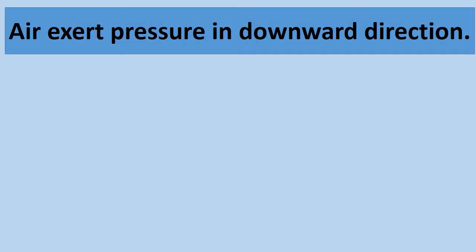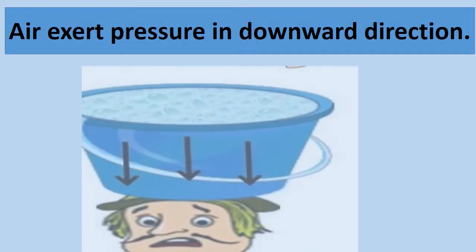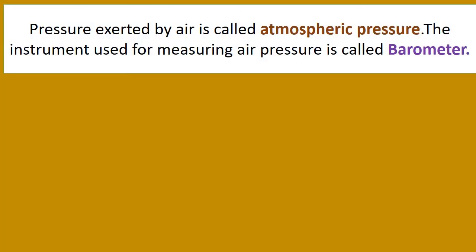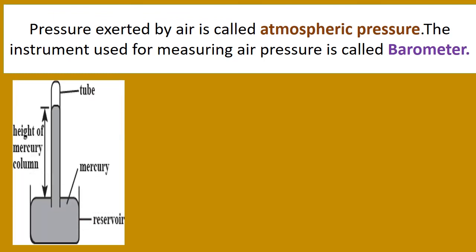Air also exerts pressure in the downward direction. In this picture you can see a person carrying a heavy bucket on his head and feeling the weight. The weight he feels is because of air pressure acting downward. The pressure exerted by air is called atmospheric pressure. The instrument used for measuring air pressure is called a barometer. This is the picture of a barometer.